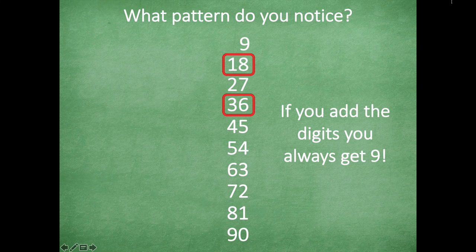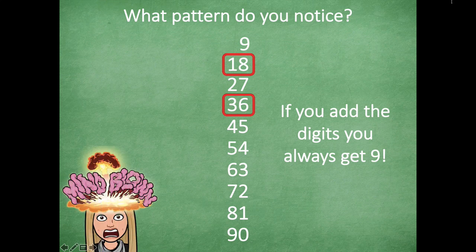So if you're checking your multiplication facts — say you did nine times five and got 45 — if you add those digits together you should get nine. If you don't get nine when you add the digits, that means you made a mistake. If you add those two digits and they equal nine, then you nailed it — you multiplied by nines correctly. That's pretty amazing!